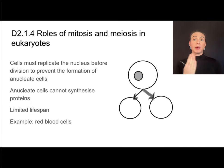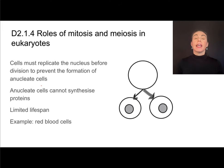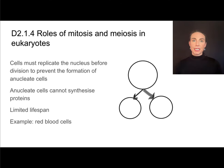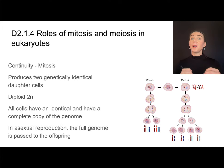Before cells can divide their cytoplasm, they must replicate their genetic material inside the nucleus. The reason they do that is so that when they split into two cells, each cell may receive one nucleus, meaning we won't end up with any anucleate cells — cells without a nucleus. There are some cells that don't have nuclei, for example red blood cells. Red blood cells do not have a nucleus, which means they can't synthesize proteins — there's nothing there to transcribe and translate. This is why red blood cells typically only live a few months in our body and must continually be regenerated.